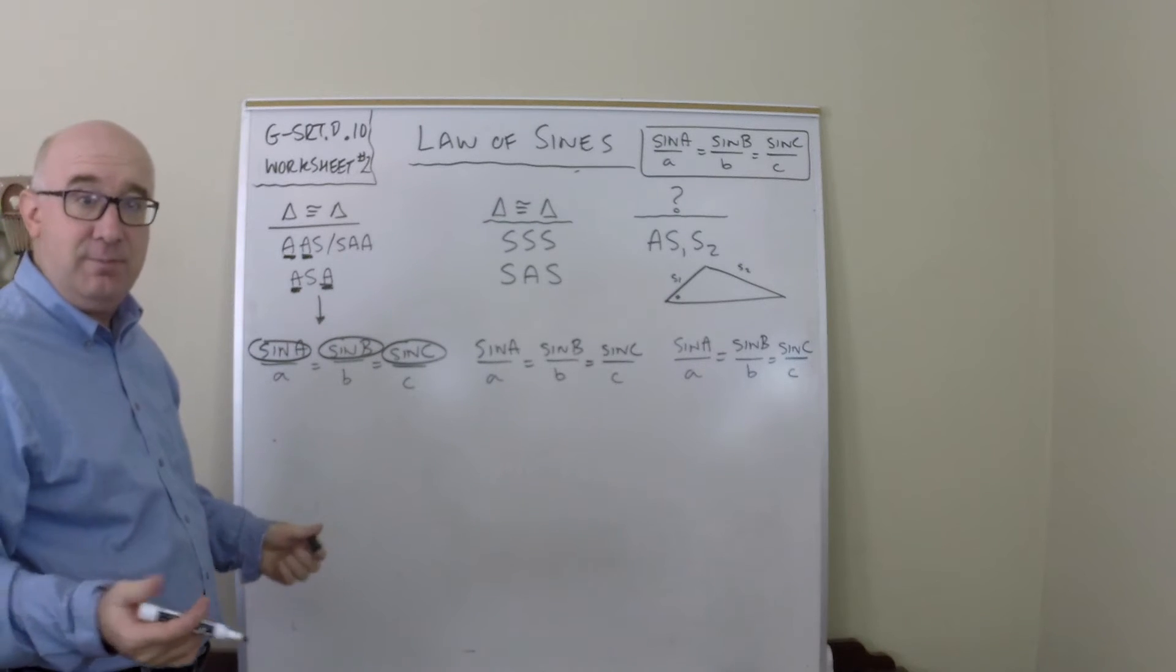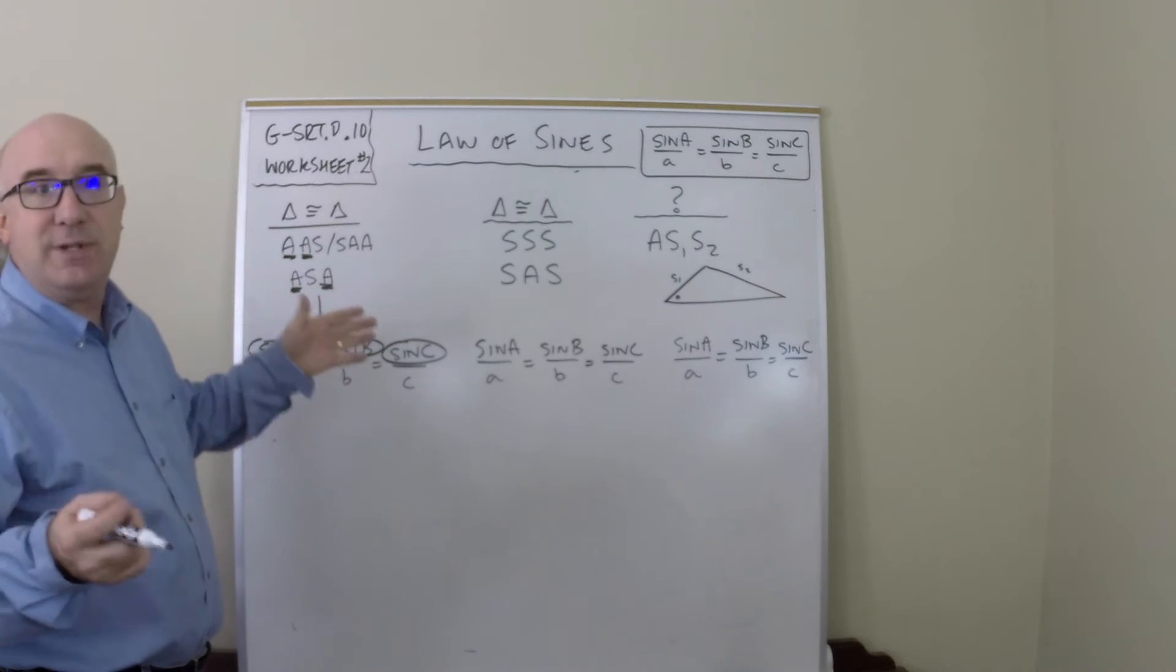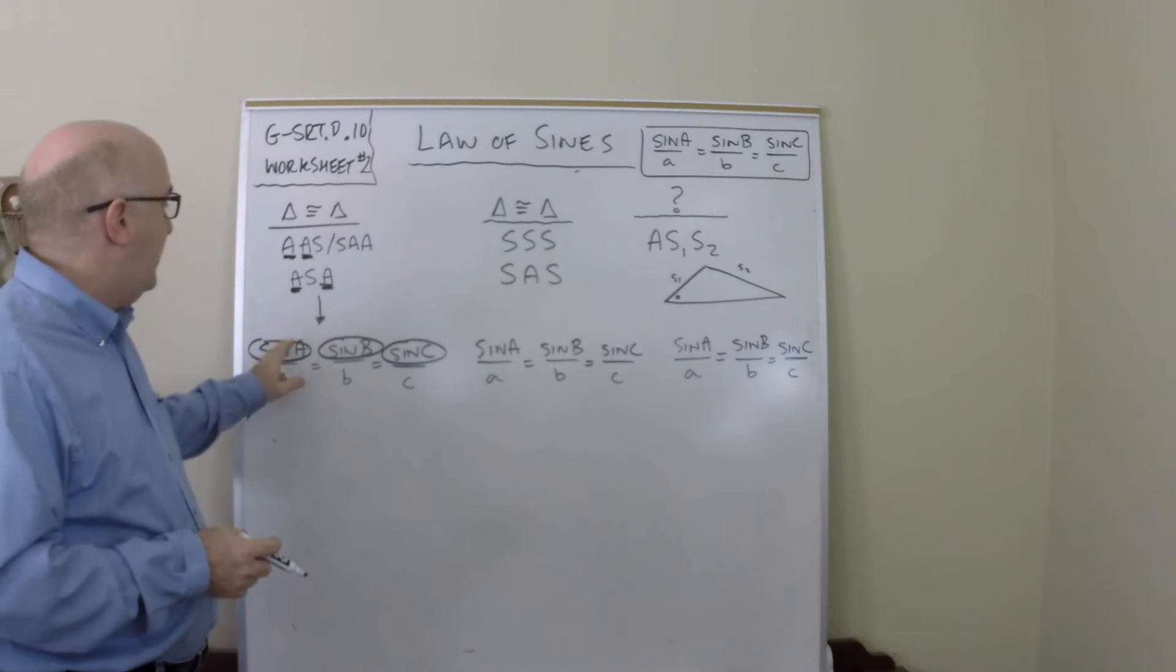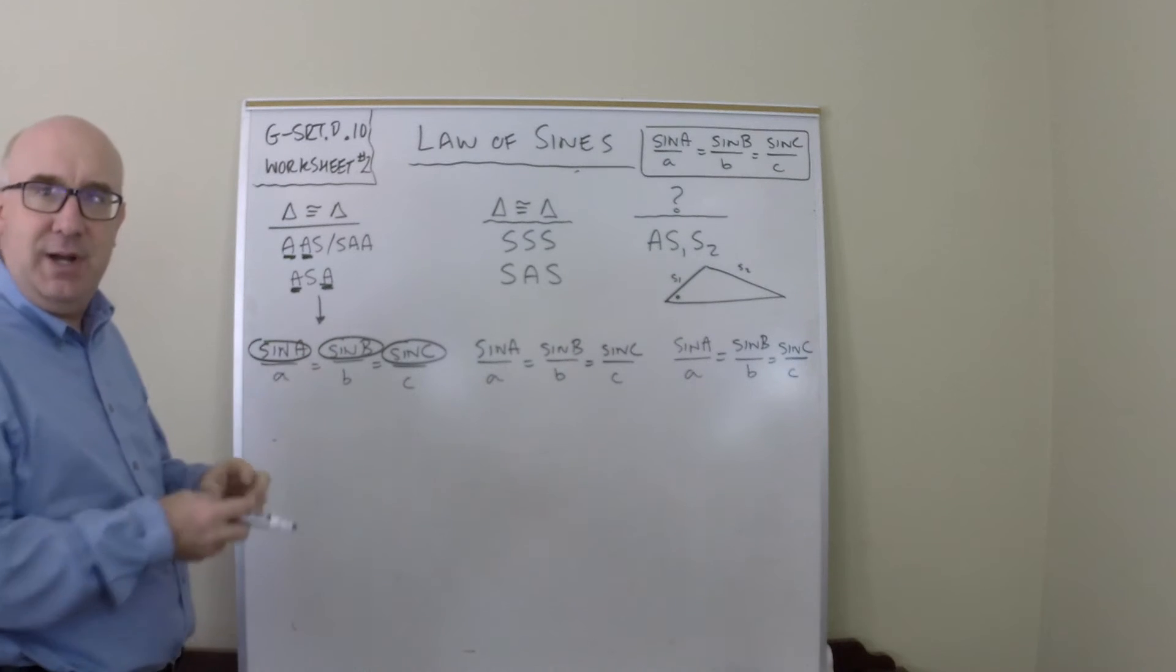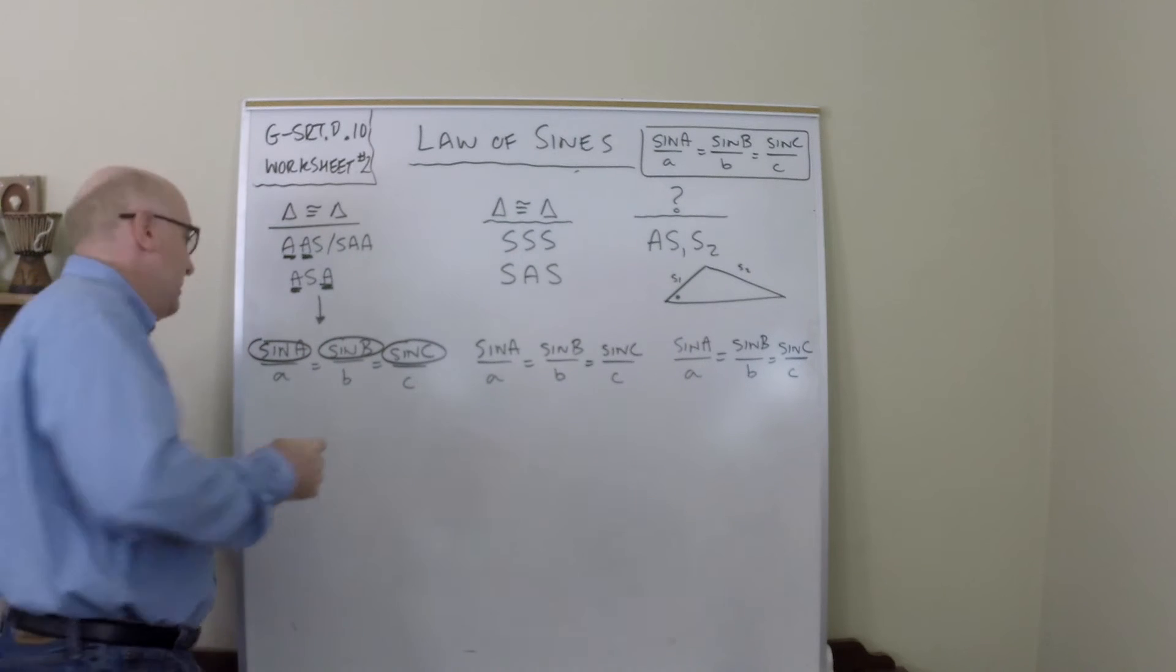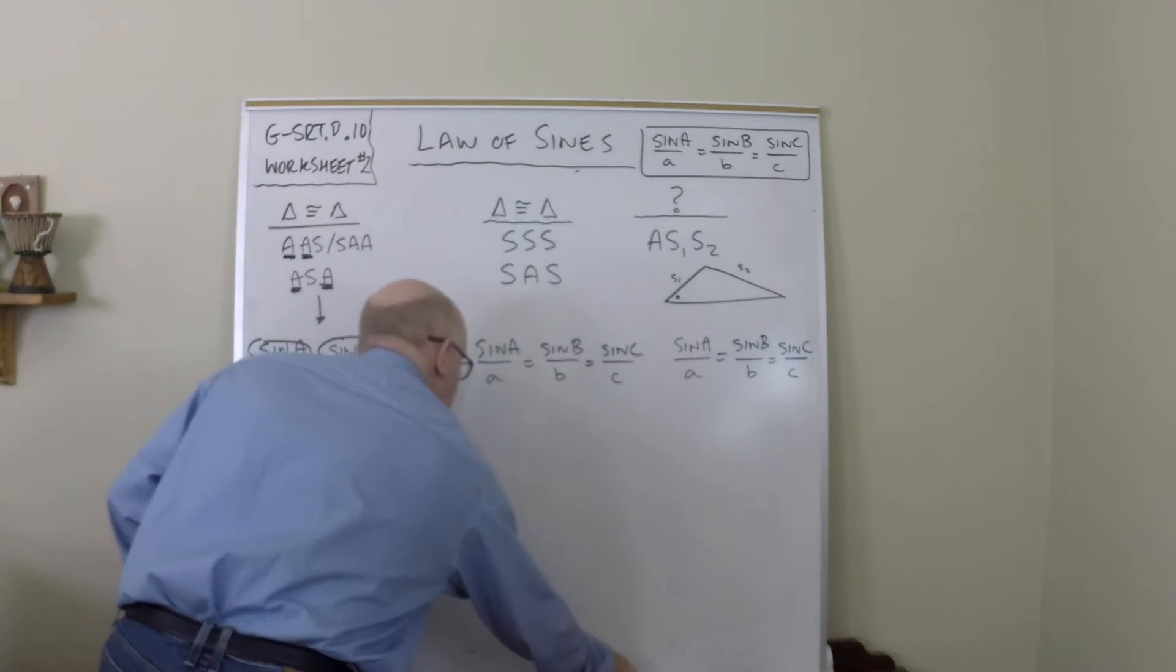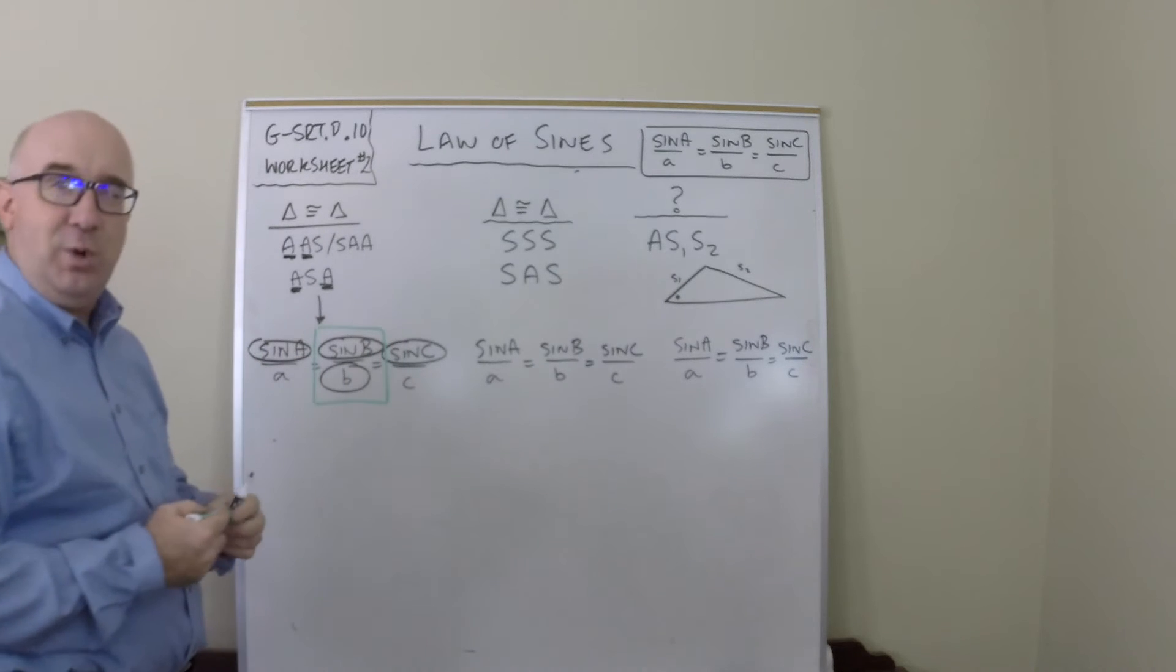So all three angles are automatically known, and then they give you a side. I don't know which side—was it the included one, was it the one outside? But actually once you have all three, you're gonna know one of the sides. One of them will be known, and immediately you have what is needed for the Law of Sines to work, which is that beautiful pairing of an angle to its opposite side.